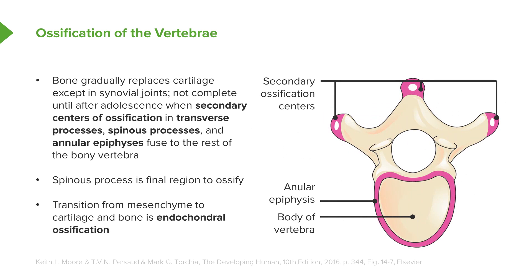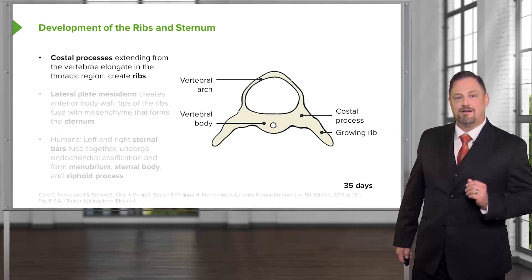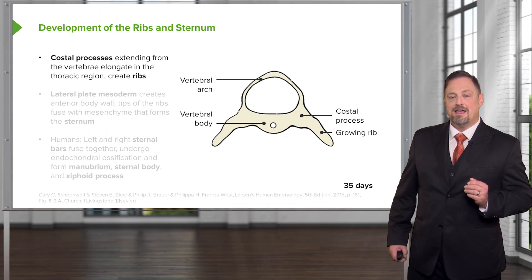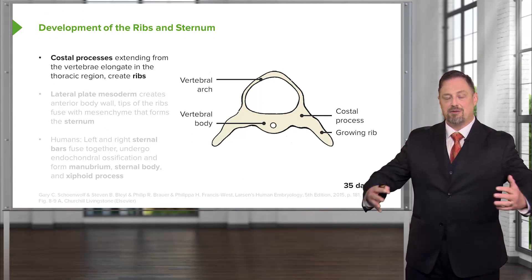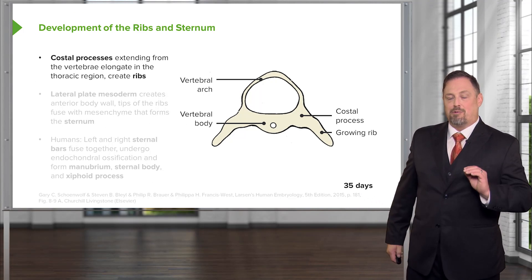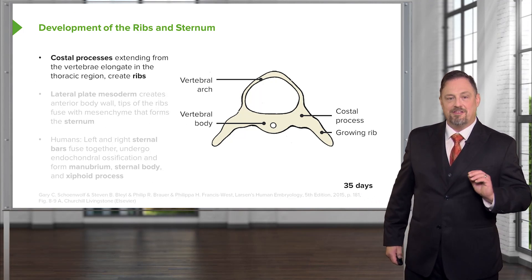This process of forming the vertebra is called endochondral ossification, which we'll see in detail in the limbs. The short story is that it's the process by which mesenchyme becomes cartilage, then becomes bone — a three-step process to the creation of bone. The ribs also develop off of the sclerotome, and as the somatopleure wraps around the body and forms an anterior body wall, it pulls the portion of the sclerotome that will form the ribs along with it.